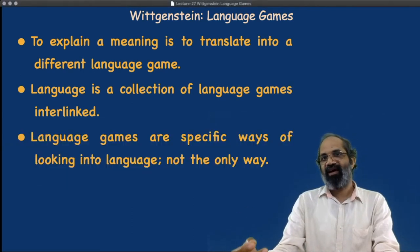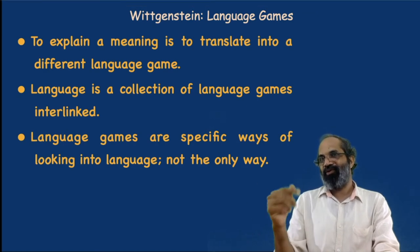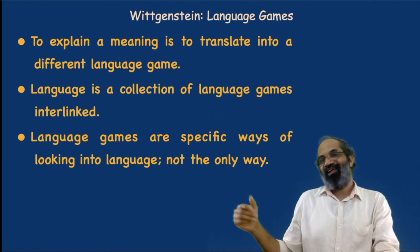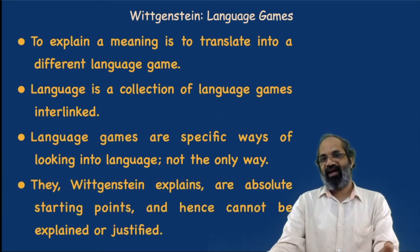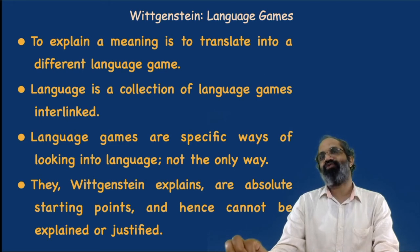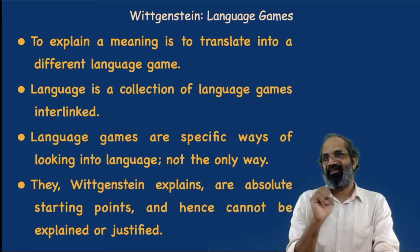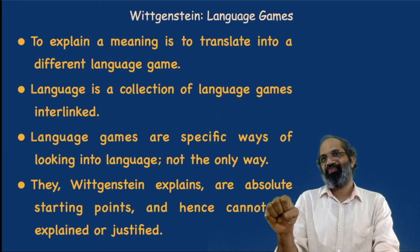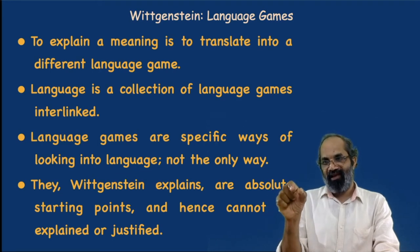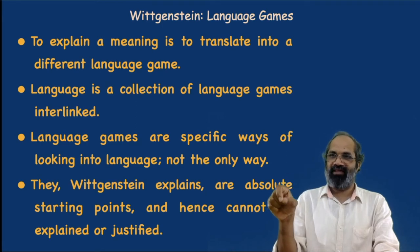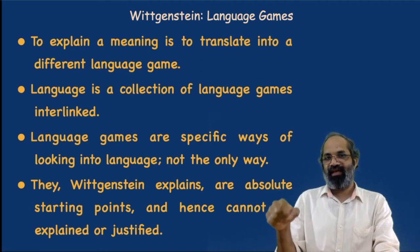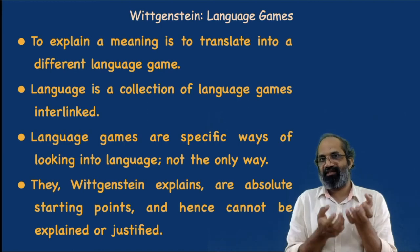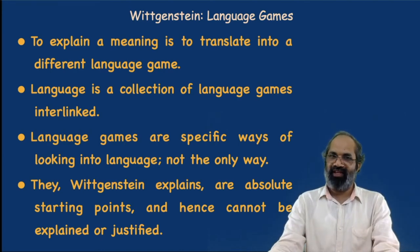Language games are specific ways of looking into language, not the only way — you can look into language in many ways. Language game is one way of looking into language. Language games are absolute starting points and hence cannot be explained or justified. Just as objects in the early Wittgenstein are fundamental and cannot be further described, language games are fundamental and are absolute starting points in deriving or explaining the meaning of a word or sentence in the later philosophy of Wittgenstein.